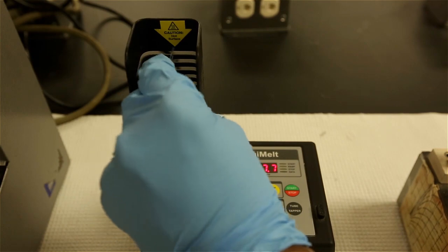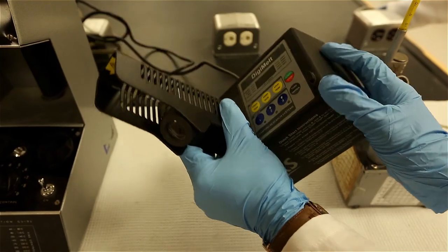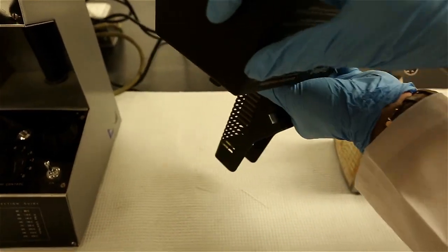If a capillary tube ever breaks in the instrument, carefully flip the instrument upside down to remove the broken glass and then dispose the broken glass in the broken glass container and not the wastebasket.